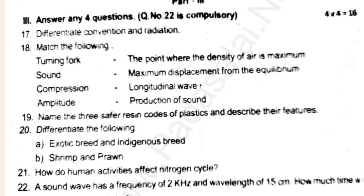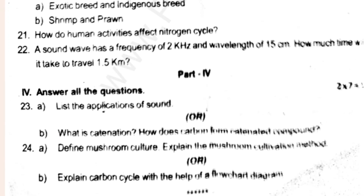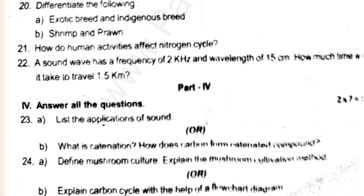Difference between conduction and radiation — 17, 18, match it 19, 20, 21. Very simple. Now we have 7 marks: list the application of sound, define mushroom culture, explain the mushroom cultivation method, explain the carbon cycle with the help of a flowchart diagram, what is contamination, how does carbon form covalent compounds?